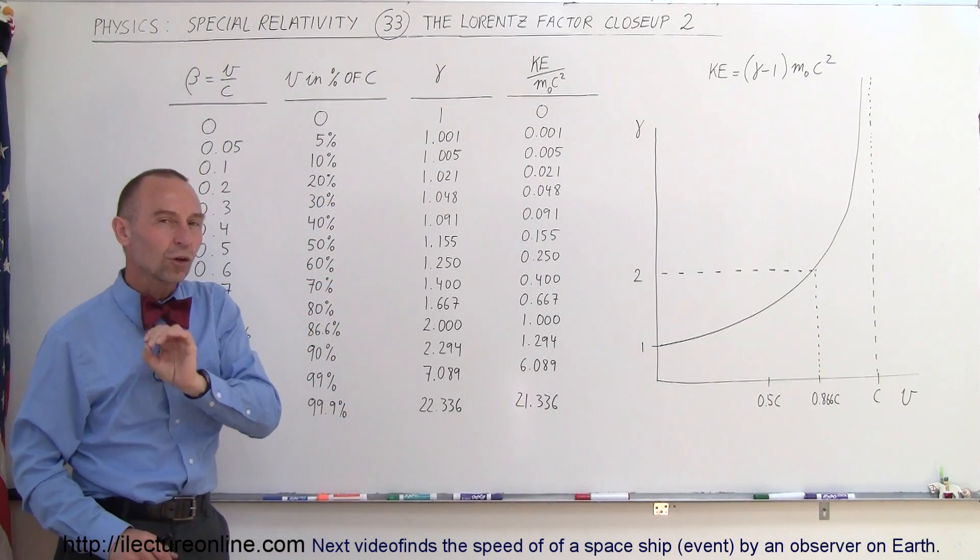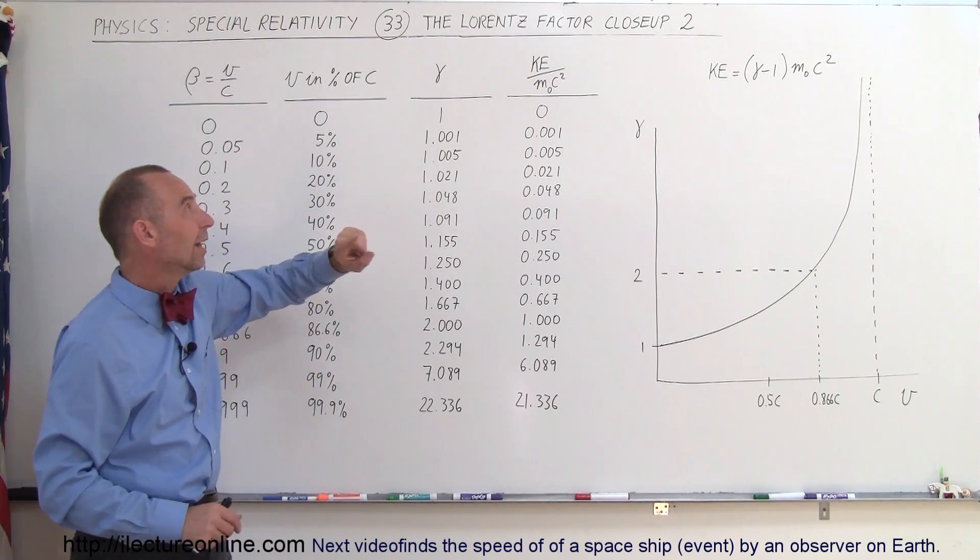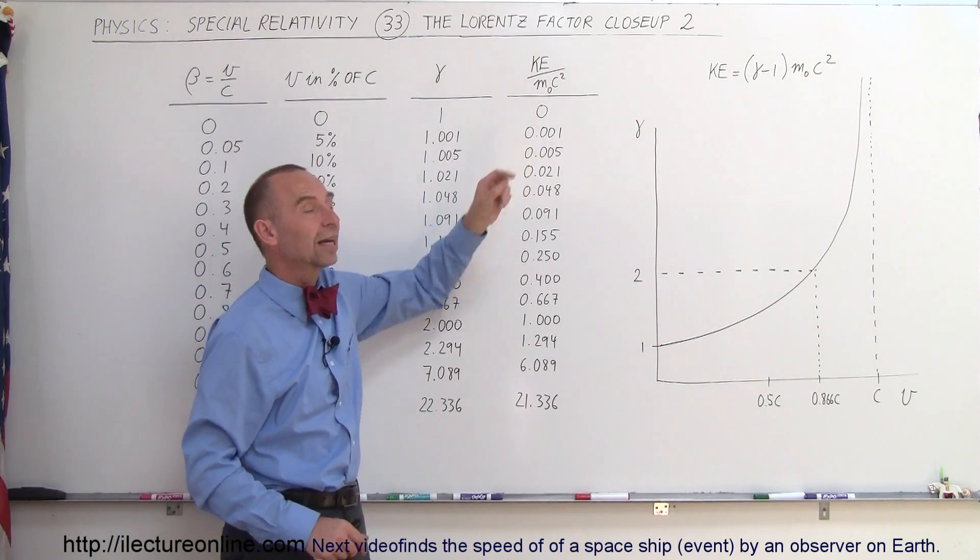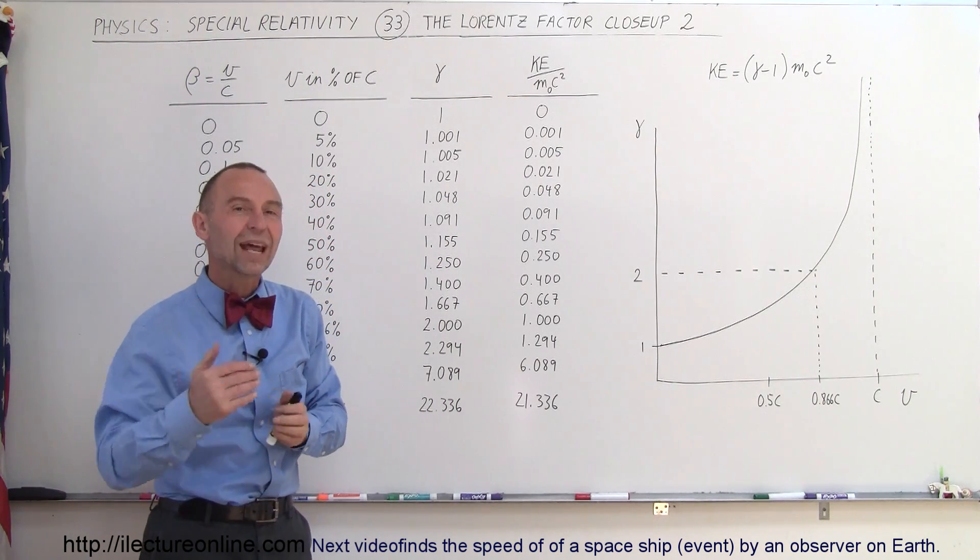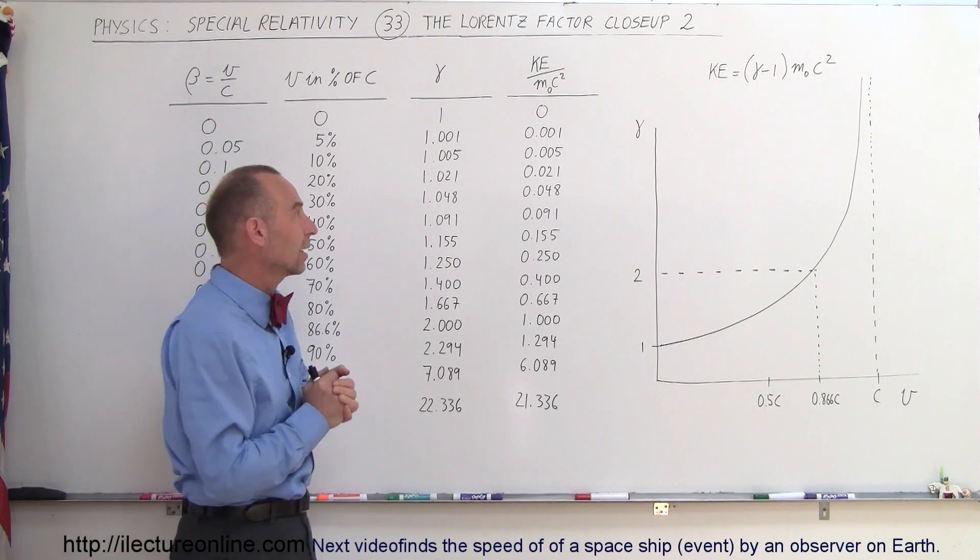When the Lorentz Factor is no longer near 1, this is significant. You can see there's significant kinetic energy created by that very high velocity, which goes beyond 1/2 mv². It now becomes relativistic kinetic energy.